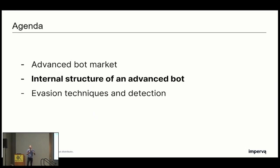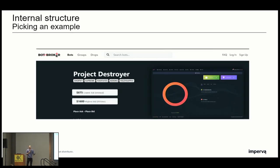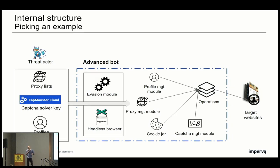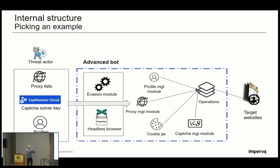Now let's look at the internal structure of an advanced bot. I took the example of Project Destroyer, which was worth around $1,000 a bit more than a year ago. It's a scalping bot, and a good example because most of the components it contains are present in most advanced bots I collected. The main component is the headless browser — in this case Puppeteer — plus the Puppeteer Extra Plugin Stealth module to make it even harder to detect. And there is an additional evasion module, usually behind a folder called 'scripts' or 'utils', containing functions the bot developer wrote to make detection harder by both the target website and the security vendor.